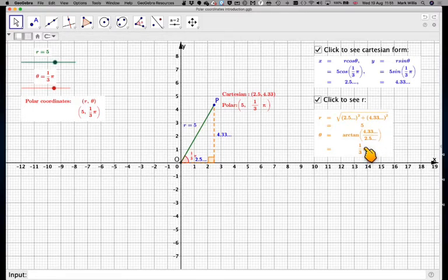And then to find the Cartesian coordinates, the x coordinate would be r cos of the angle, so there'll be 5 times cos π over 3. And the y coordinate would be 5 sine π over 3. And that would give the values 2.5 rounded off and 4.33.